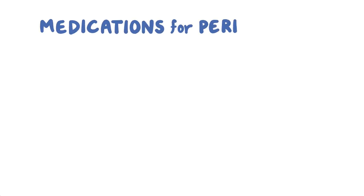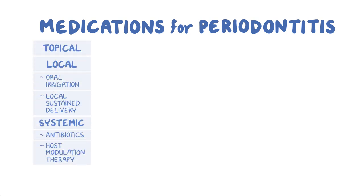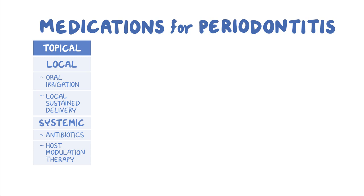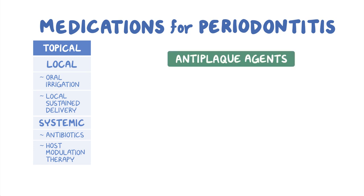Based on the type of delivery, medications used in the treatment of periodontitis can be subdivided into topical, local, and systemic medications. The most common topically delivered medications are anti-plaque agents, which are usually delivered in the form of mouthwashes. Based on their antimicrobial and anti-plaque effect, these agents are subdivided into three generations.